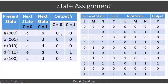And in the case of output Y, the values are: 0, 0, 0, 0, 0, 0, 0, 0, 1, 0, 1. Like that we are getting this state table.